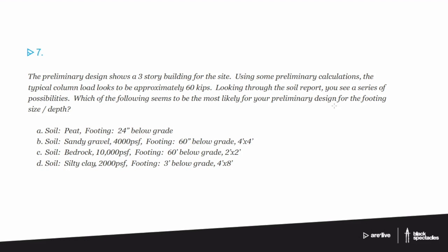The preliminary design shows a three-story building for the site. Using some preliminary calculations, the typical column load looks to be approximately 60 kips. Looking through the soil report, you see a series of possibilities. Which of the following seems to be the most likely for your preliminary design for the footing size and depth?